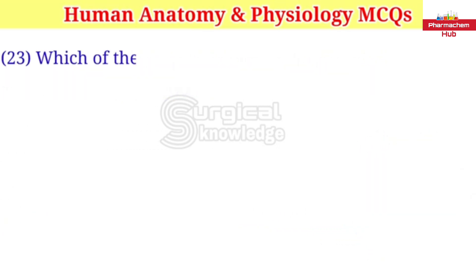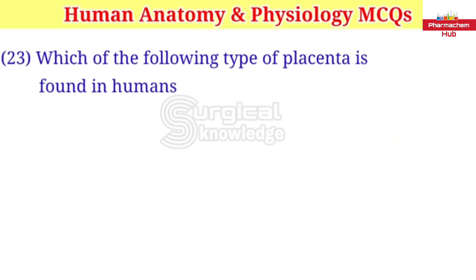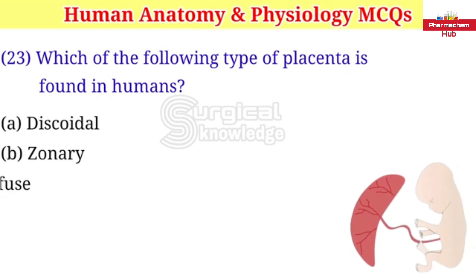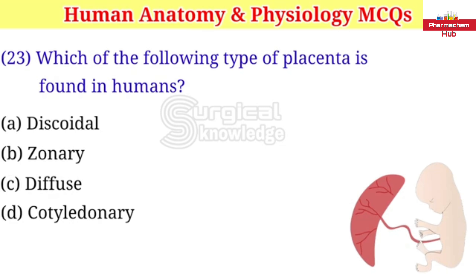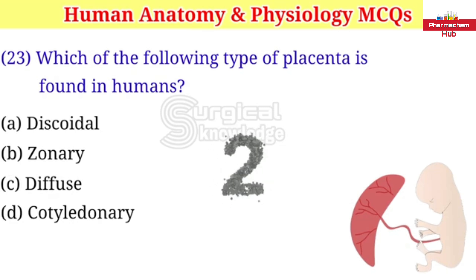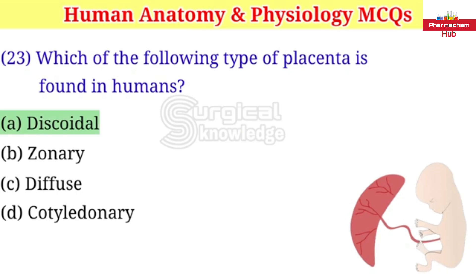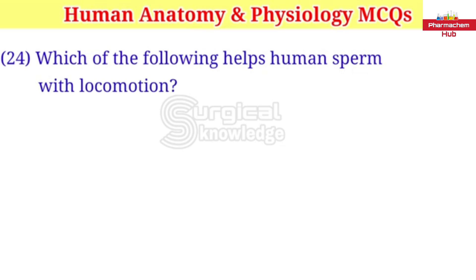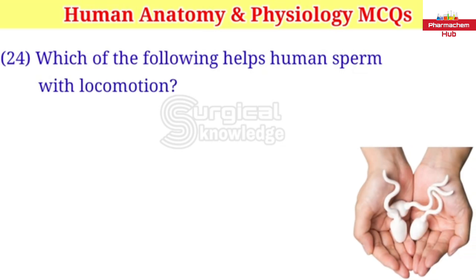Which of the following type of placenta is found in humans? A. Discoid B. Zonary C. Diffuse D. Cotyledonary. Right answer is discoid.